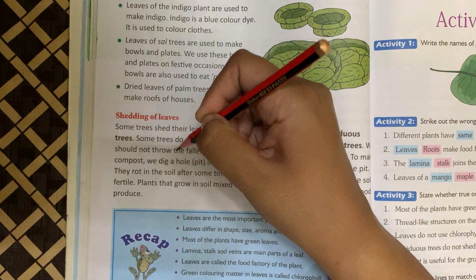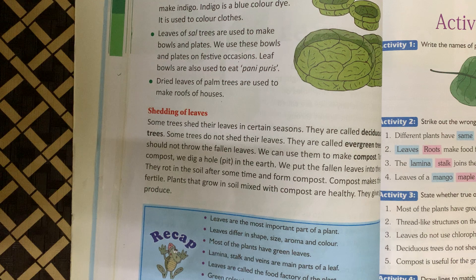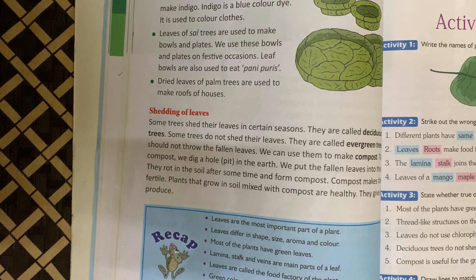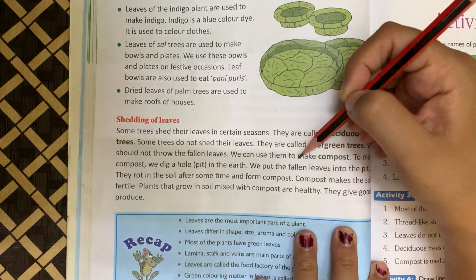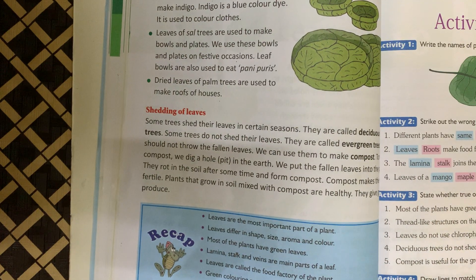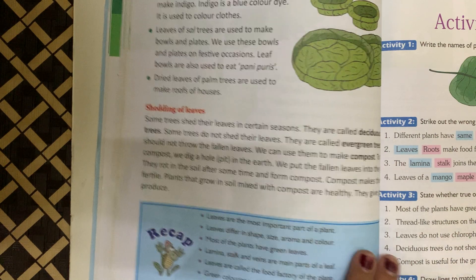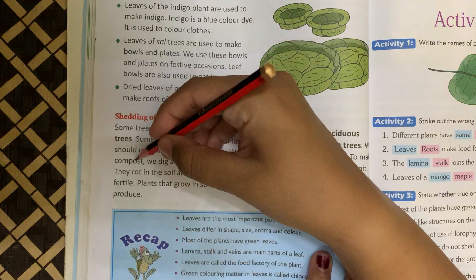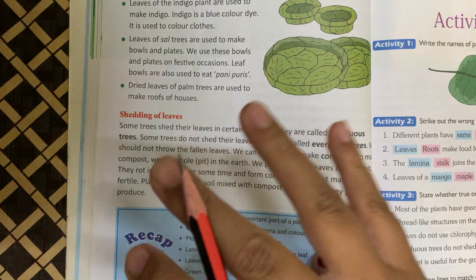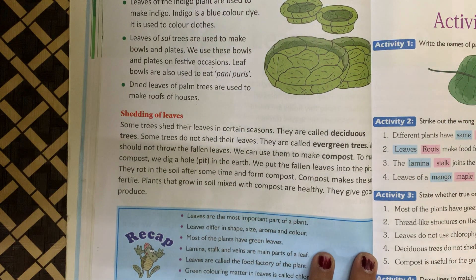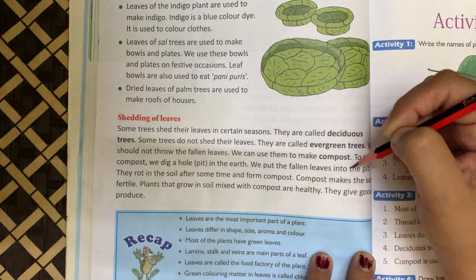We should not throw the fallen leaves. Ab jo pattiyaan ped se gir jaati hain, hum use fek dete hain, par hume use fenkna nahi chahiye. We can use them to make compost. Hum un tooti hui leaves ka compost bana sakte hain. To make compost, hum zameen mein ek gadha karte hain — ek pit karte hain. We dig a hole in the earth.